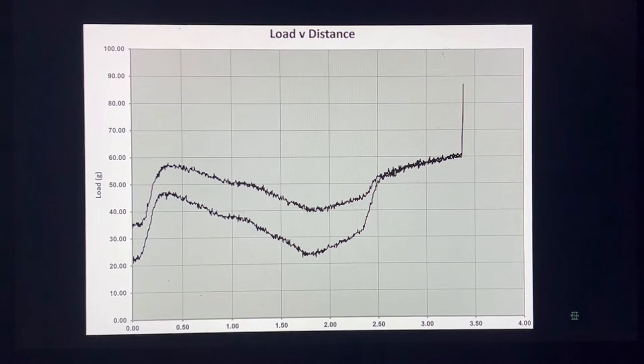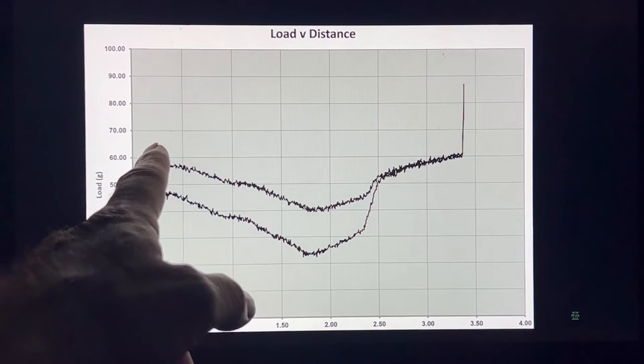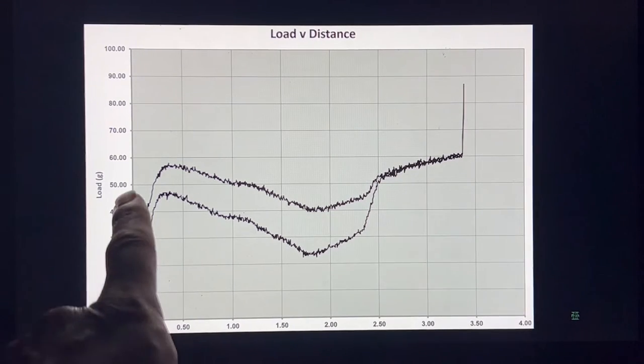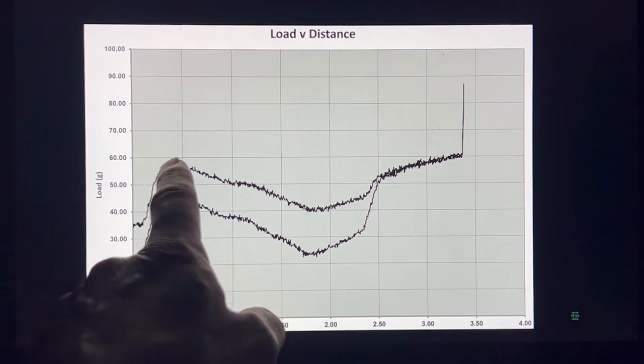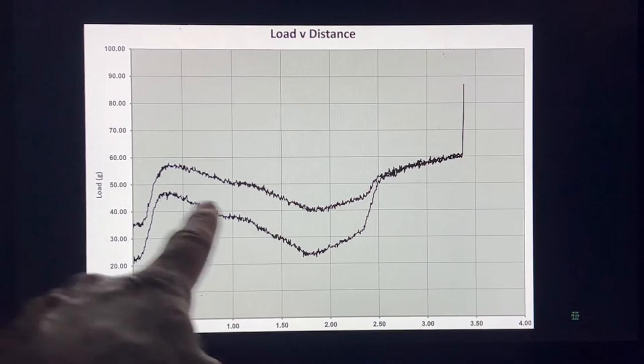And then next we have Load versus Distance. This first one is the Panda. So you can see that it spikes up early, comes down again, and then comes up. So in here you take a lot of force to get it, and then it becomes, you don't need as much force, and then you increase force again as you kind of increase the travel until the very end. And then this is the Return.